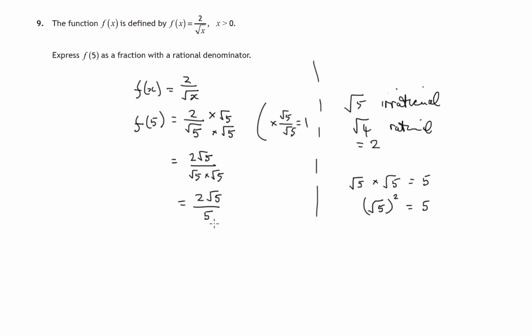And there's a fraction with a rational denominator. 5 is a nice chunky whole number, it's rational. So the answer is 2 root 5 over 5.